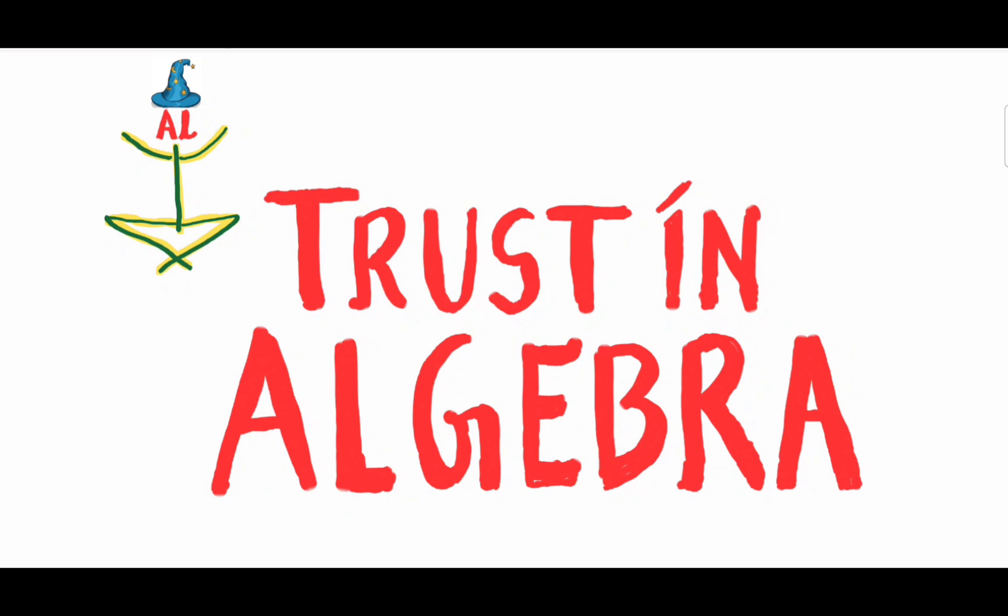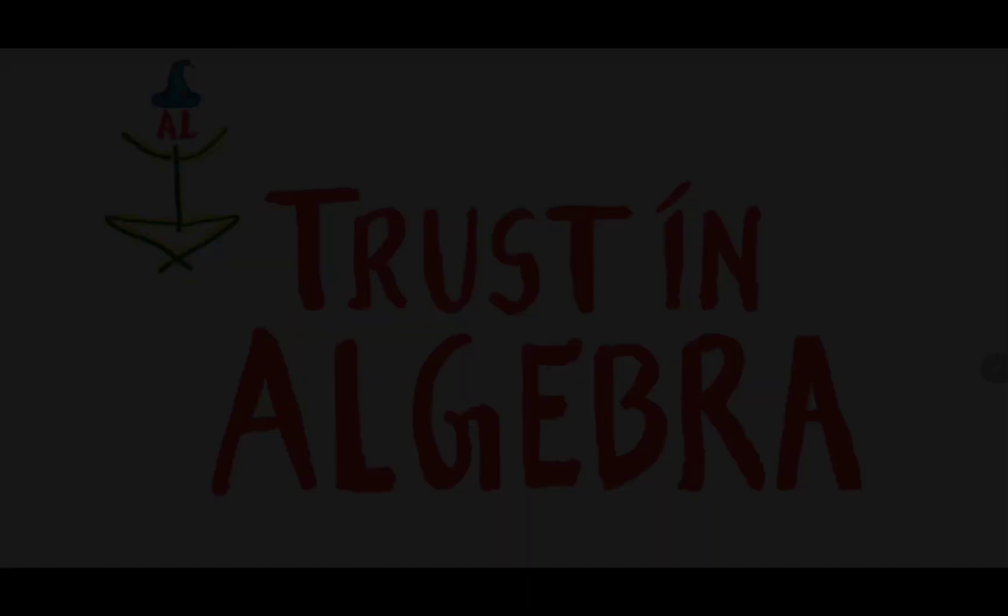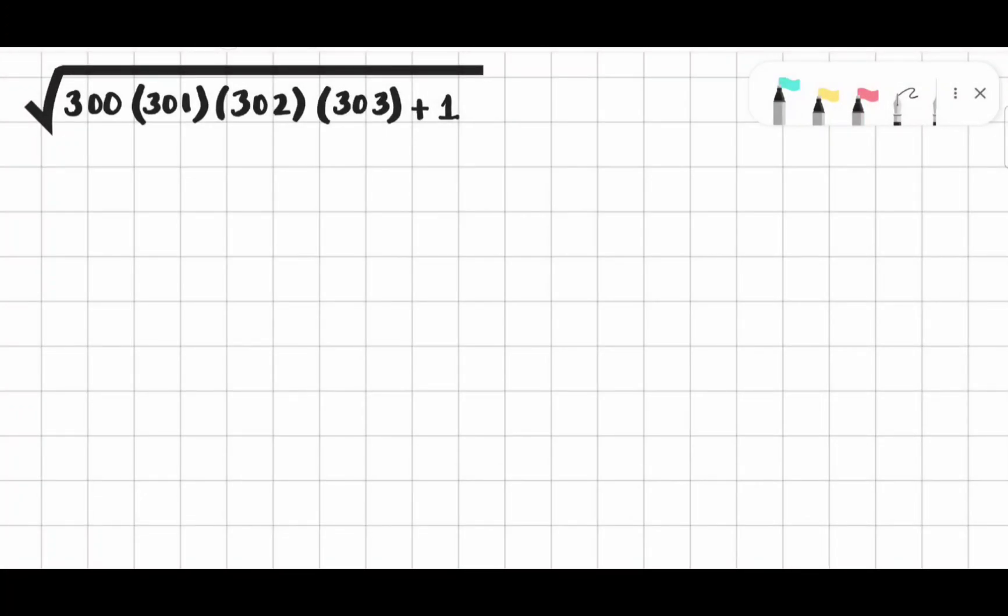This video is one of the witnesses why we trust in algebra rather than calculator. As you can see here, some bunch of numbers multiplied together with 1 inside the square root, or we simply call it as radicand.